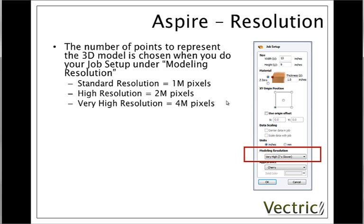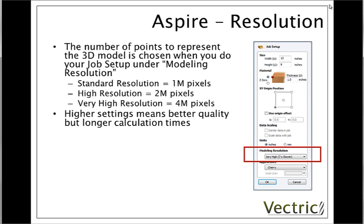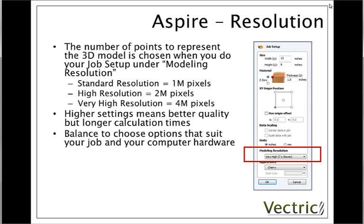Within modeling resolution we can choose from three options. We have standard resolution, which means our part will have one million pixels. We have high resolution, which is two million pixels, or very high resolution, which is four million pixels. These will be evenly distributed across whatever the size of our part is in a grid. As you'd expect, choosing more pixels gives better quality, but the trade-off is potentially longer calculation times when calculating 3D shapes or toolpaths.